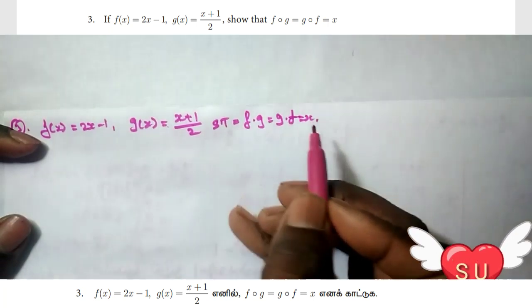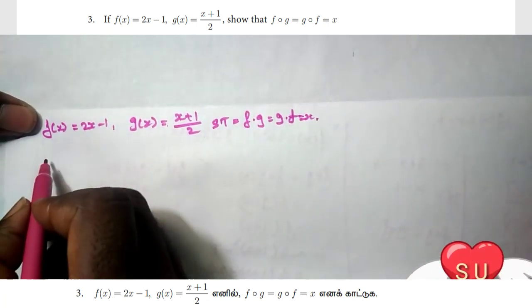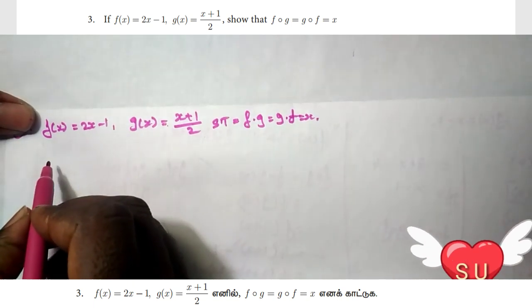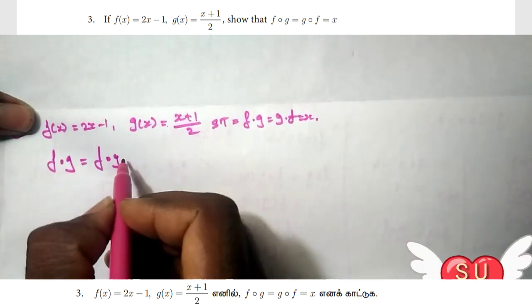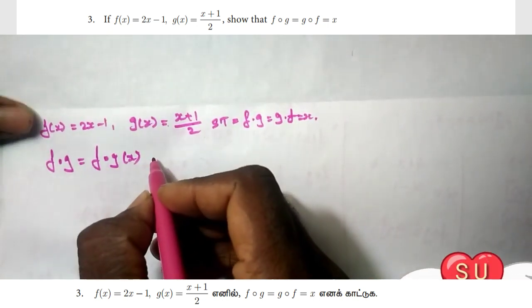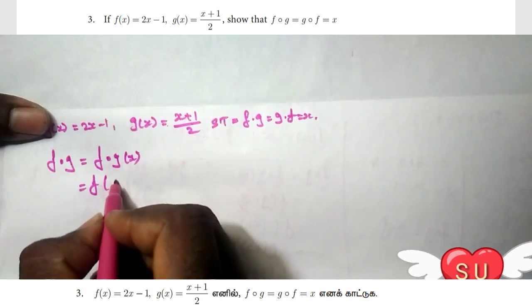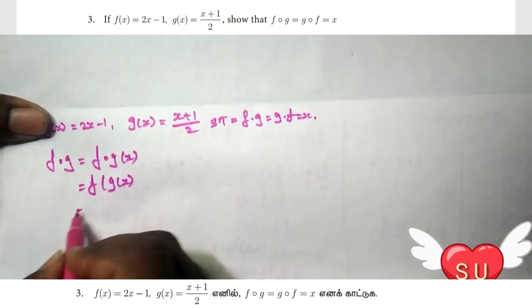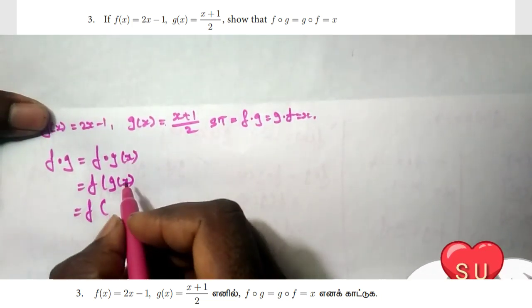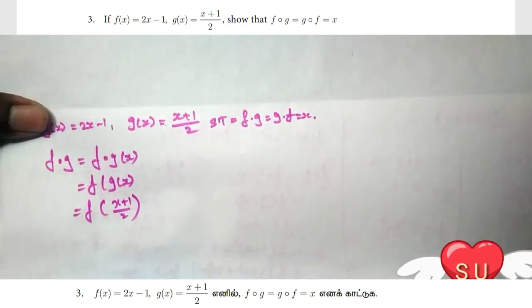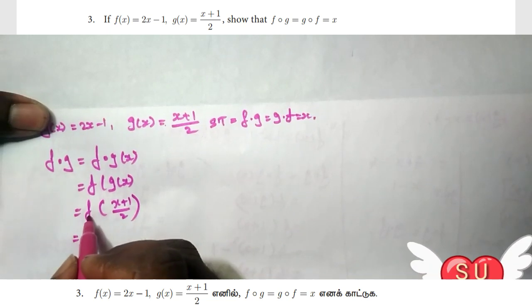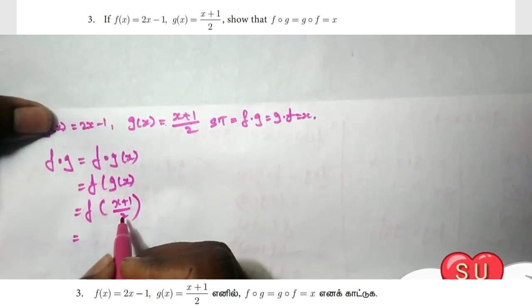So first, f composition of g. This is how to write f(g(x)). So f(g(x)), and g(x) = (x + 1)/2, so we write f of (x + 1)/2.